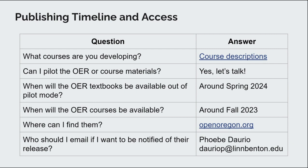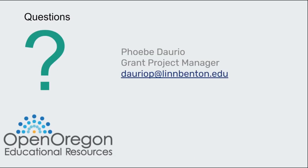This last slide might answer some of your questions. In the top right, you can click on a link to course descriptions and see a project description for each of the four criminal justice courses we're developing along with their course outcomes. Our OER textbooks will be available around spring 2024 and the course packs around fall 2023. You can email me if you'd like to be notified of their release. I welcome any other questions you have, and I appreciate you coming to the session. Thank you.